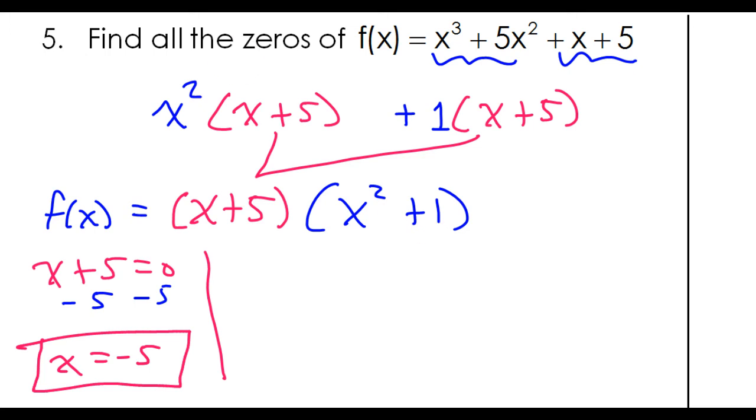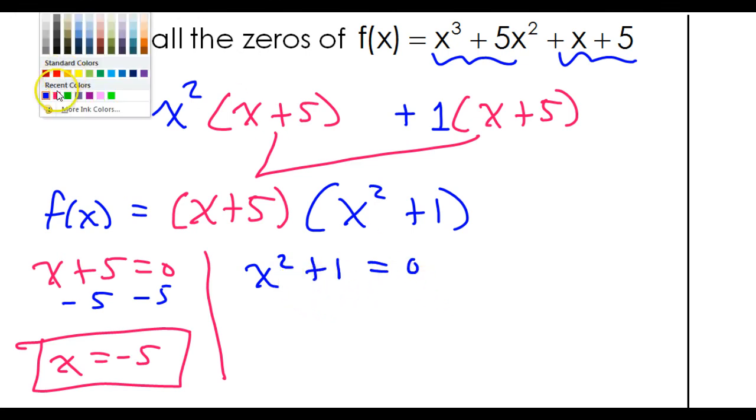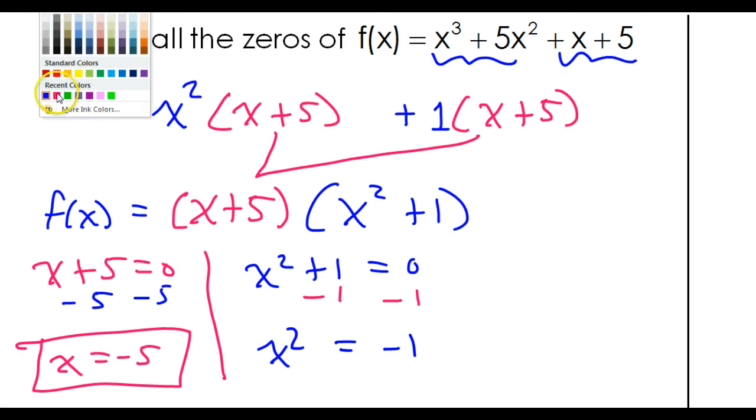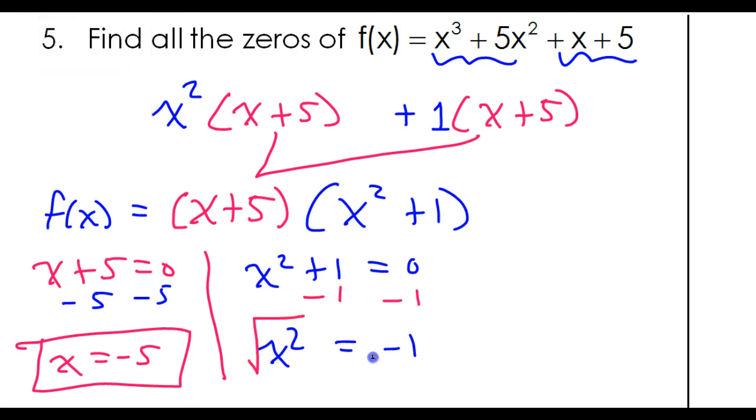Now if I take this one and set that equal to zero, so if I go x squared plus 1 equals zero, I'm going to subtract 1 from both sides, minus 1, minus 1. So that will give me x squared is equal to negative 1. Now I could take the square root of both sides. Don't forget your plus or minus whenever you take the square root of both sides.